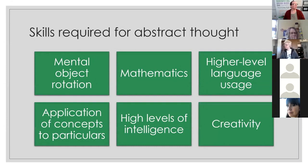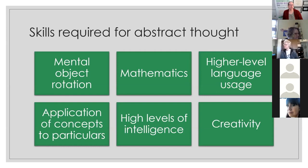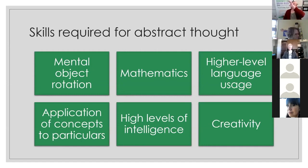Skills required for abstract thought - and this goes back to what the psychologist is doing when looking at an IQ - include: mental object rotation, which really is form constancy; mathematics, which is also part of form constancy; higher level language usage; application of concepts in particular instances; and high levels of intelligence and creativity.